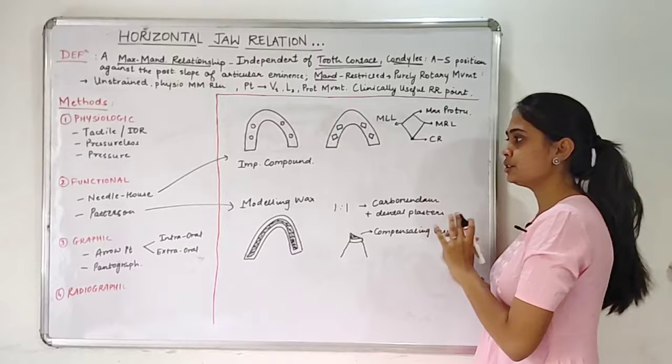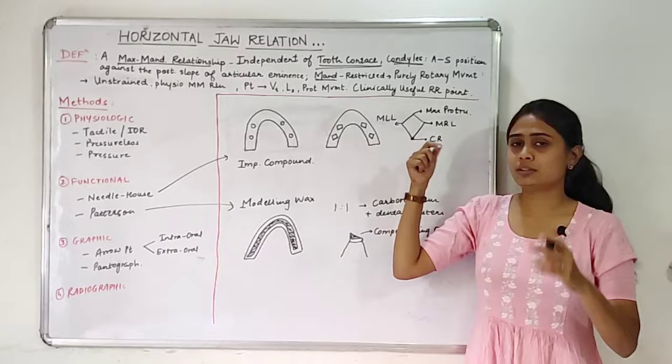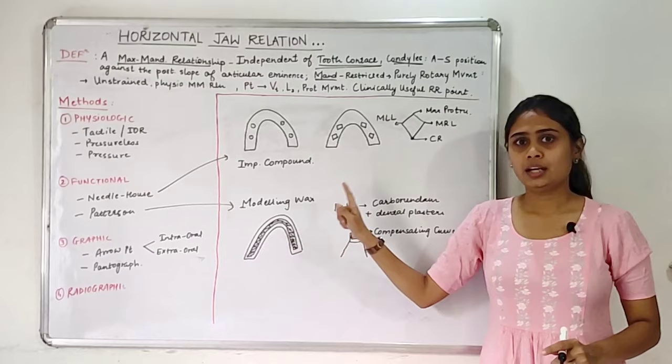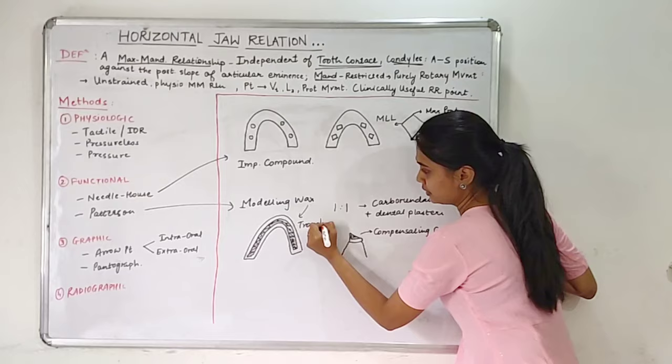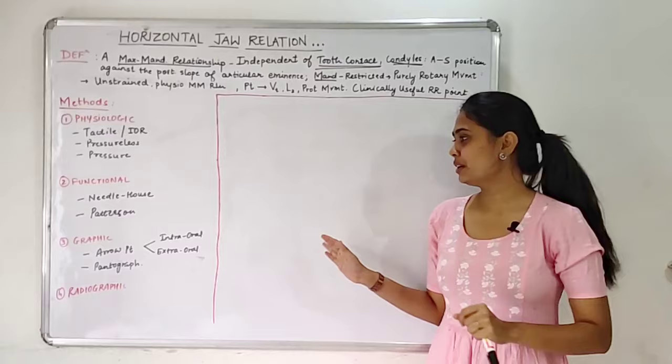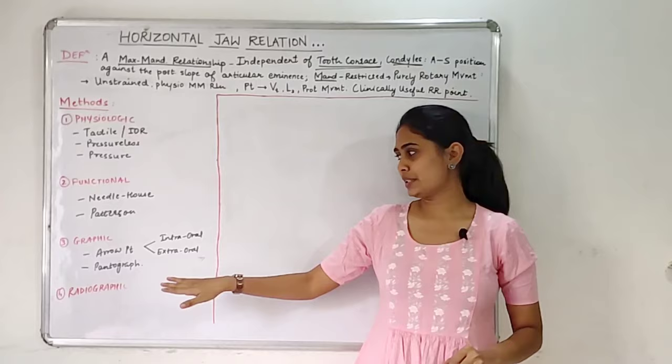Quick revision of both functional methods: In needle house, we have metal bead stylus markers, we get a triangular or diamond shape, and the most retrusive position is our centric relation — impression compound is used. In the Patterson method, we use modeling wax, create a trough along the entire rim, fill it with a 1:1 ratio of carborundum and dental plaster, and with functional movements we get compensating curves to record centric relation. Moving on, we go to graphic methods, which have two subtypes: arrow point method and pantograph method.